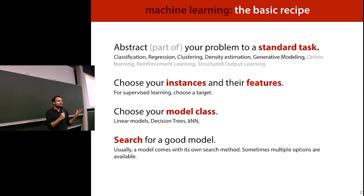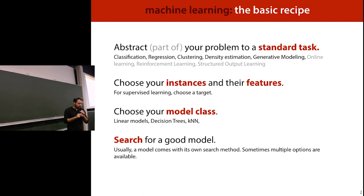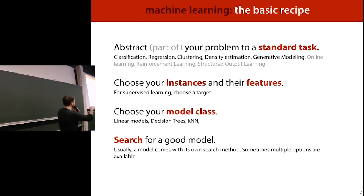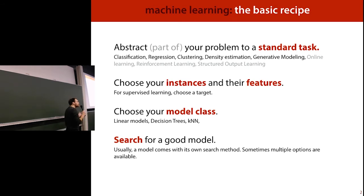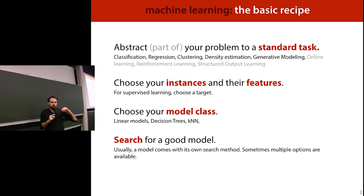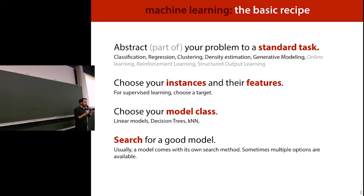In the very simplest way of thinking about it, this is what all machine learning is. What we're going to do today and this week is talk about everything around this algorithm — not the recipe itself. We assume you've picked something like a linear model. But what do you do before this? How do you prepare your data? How do you choose your features? How do you choose your instances? How do you look at your data? That's what you do before the recipe, and we'll talk about that on Thursday.